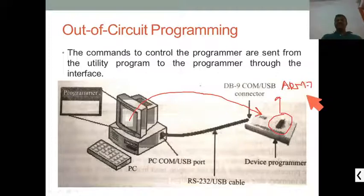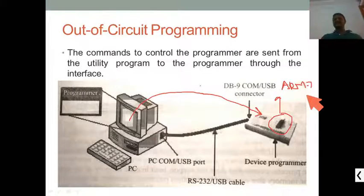The target device can be ARM7 or any other processor or microcontroller like those used in bike controllers, microwave ovens, or washing machines. That controller or processor is placed into the device programmer socket.